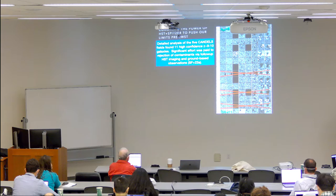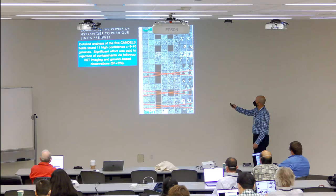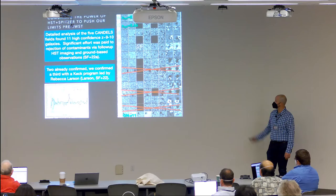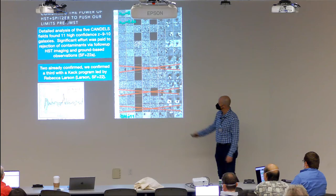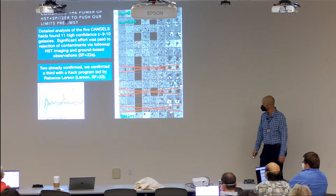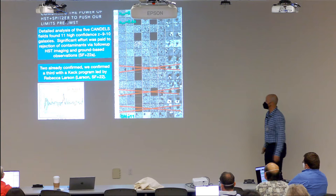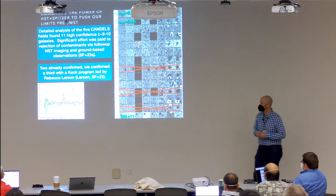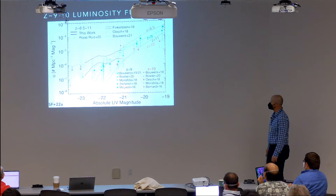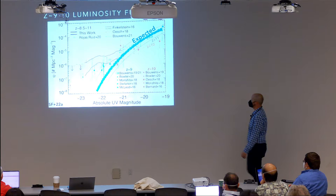We spent a long time vetting each source using ground-based information and follow-up Hubble imaging. Two of the candidates already had spectroscopic confirmations. We observed the rest and confirmed a third at redshift 8.66 — a paper by my graduate student Rebecca Larson. This galaxy is in the EGS field; the redshifts being close together is not a coincidence since these two galaxies are actually quite close together. We think we may be seeing ionized bubbles happening very early in the universe.